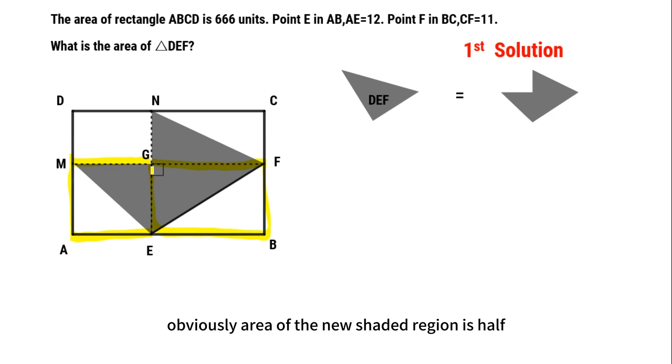Obviously, area of the new shaded region is half of these three rectangles, is half of area of ABCD, minus area of DMGN.